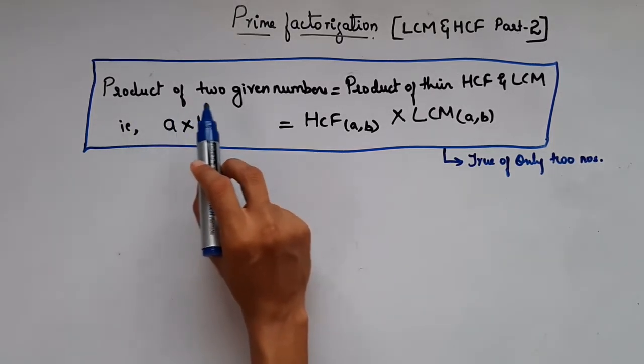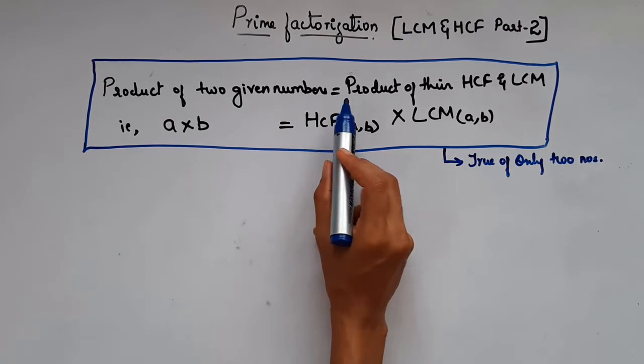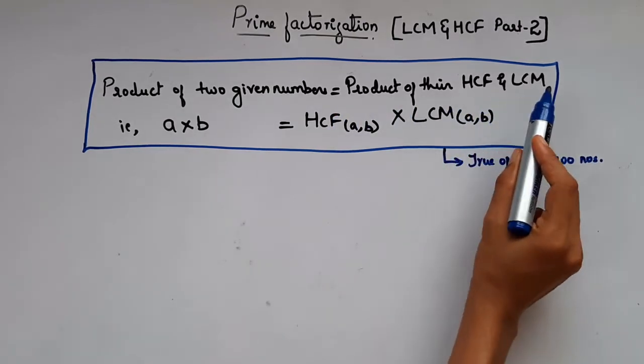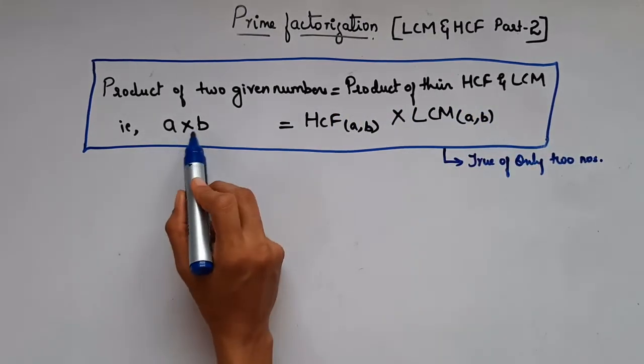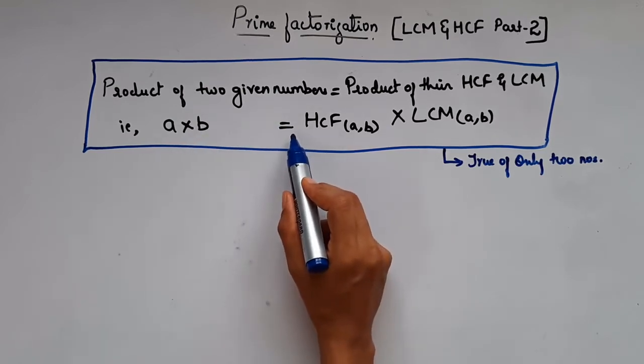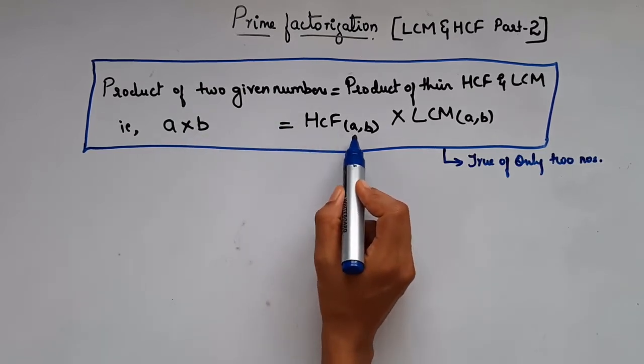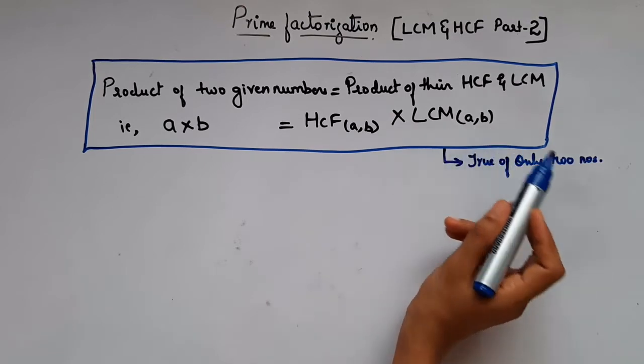Product of two given numbers is equal to product of their HCF and LCM. That is, a and b are the numbers which is equal to HCF of a and b times LCM of a and b.